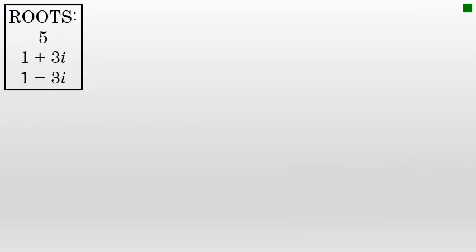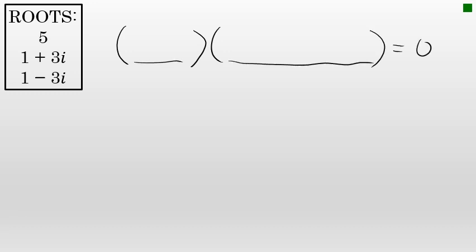I will approach this problem by writing an equation with two factors — two quantities that are multiplied together. The first quantity will be x to the first, and the second quantity will be x to the second. If I multiply these two together, that will give me an x to the third, which is the kind of equation I'm looking for.